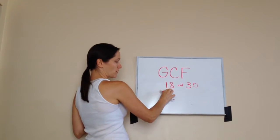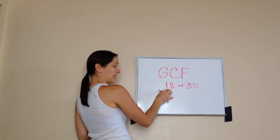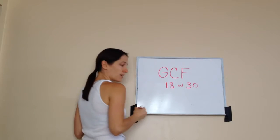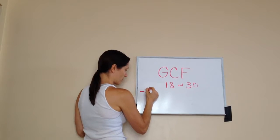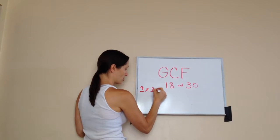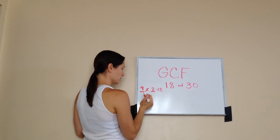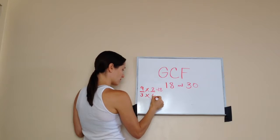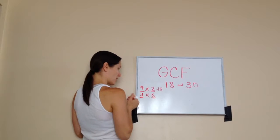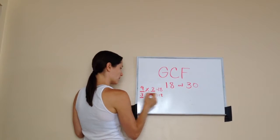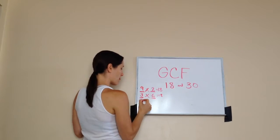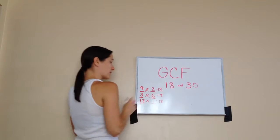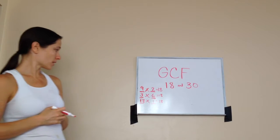So what you would do is find all the factors you can think of for 18 first. Isaac, throw me something out. That would be 9 times 2. 9 times 2 equals 18. What else? 3 times 6 equals 18. And 18 times 1 equals 18. I believe that is it. Yes, it is.